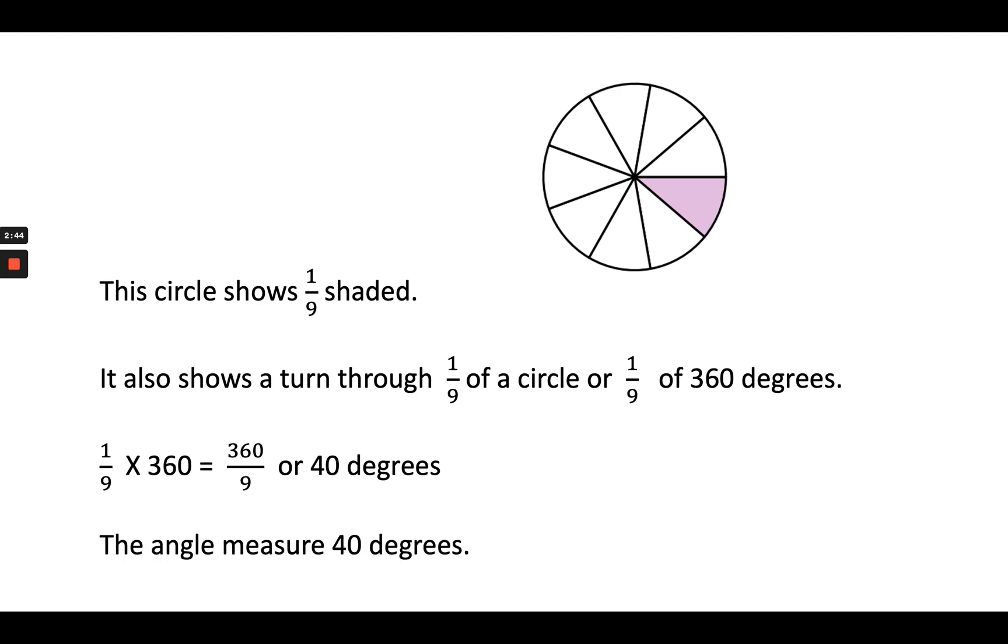So in this case and in this circle, the angle measure is 40 degrees, which means it's an acute angle. So as you begin to work with angles, think about the connections between angle measures and the fractions of a circle.